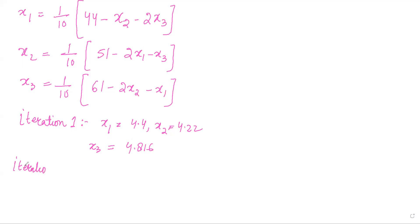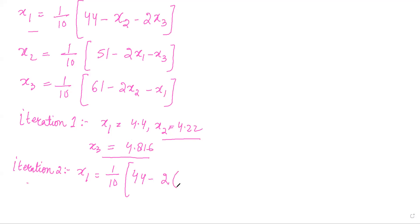Now we go to iteration 2. In iteration 2, we take equation 4 again, using the updated values x2 equals 4.22 and x3 equals 4.816 to find x1: x1 equals one-tenth of (44 minus 4.22 minus 2 times 4.816). Solving this, x1 comes out equal to 4.0154.